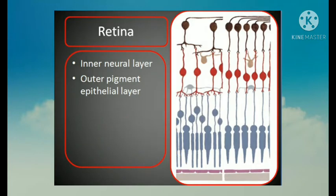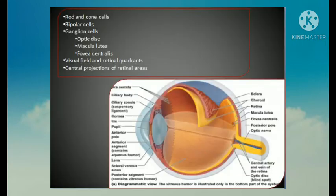The pigment epithelium consists of a single layer of cells containing melanin pigment. It reinforces the light-absorbing property of the choroid to reduce the scattering of light within the eye.